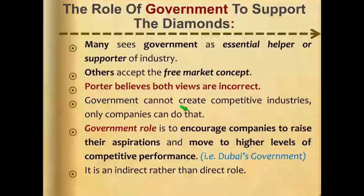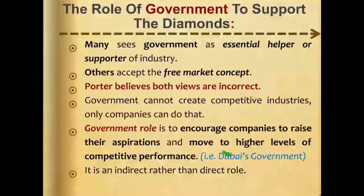This is a very important comment: the government cannot create competitive industries — only companies can do that. The government cannot directly enhance the industries, but they can help enhance the environment among all industries. The government's role is to encourage companies to raise their aspirations and move to higher levels of competitive performance, like the Dubai government or the Malaysian government. So the government's role is indirect rather than direct.